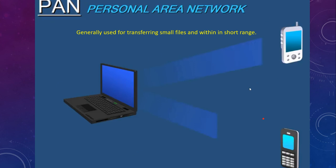Now let's look at different kinds of physical networks. The first is the Personal Area Network, or PAN. This kind of network is generally used for transferring small files and operates over very short range — for example, when connecting a mobile to a mobile, or a mobile to a laptop.